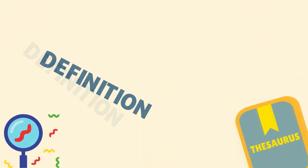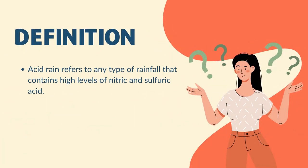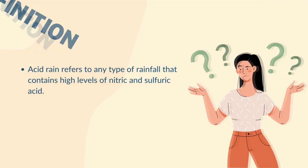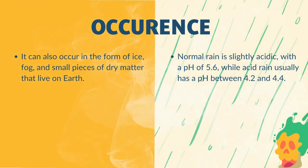Moving on to acid rain — acid rain refers to any type of rainfall that has high acidic content. It occurs in the form of ice, fog, and small pieces of dry matter that are present on earth. Normal rain is slightly acidic with a pH of 5.6, while acidic rain usually has a pH between 4.2 and 4.4.